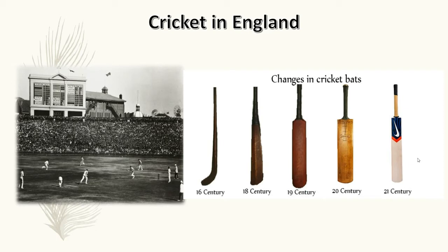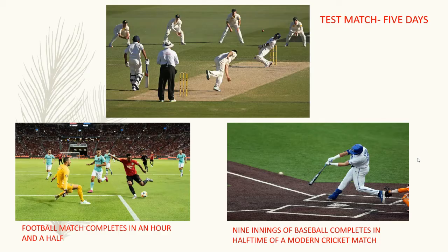The bats were curved at the bottom, and they were curved to give a chance to the batsman to make contact with the ball. Now, playing a cricket match for five days is called a Test match. They played a match for five days, but ultimately it could end in a draw, and that makes cricket different from various other games.